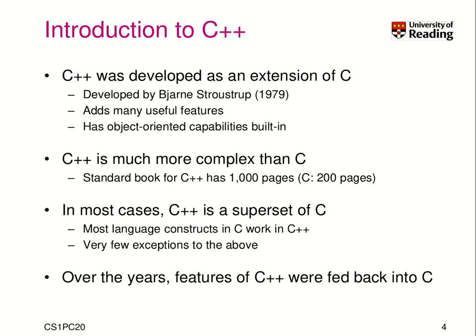For most cases, C++ is a superset of C. That means you can use basically all the language constructs provided from C in a C++ code. That means you can compile your C code as C++ code, in fact in most cases, with minor changes.